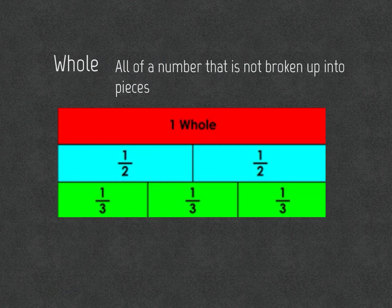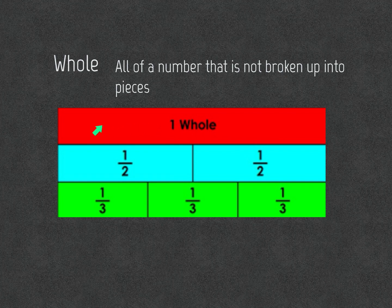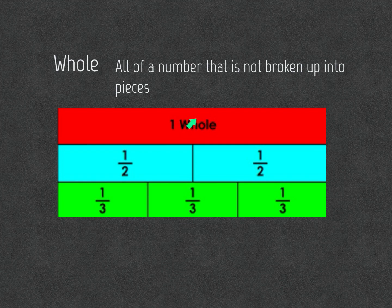A whole is all of a number that is not broken up into pieces. So this bar right here or strip is one whole because it has not yet been divided into multiple strips.